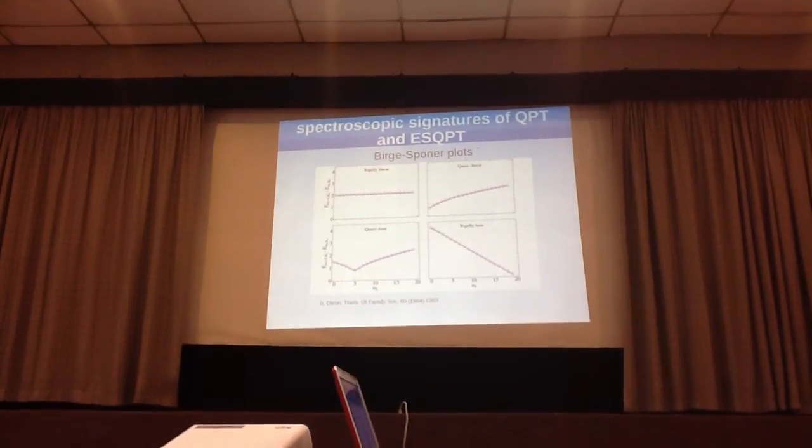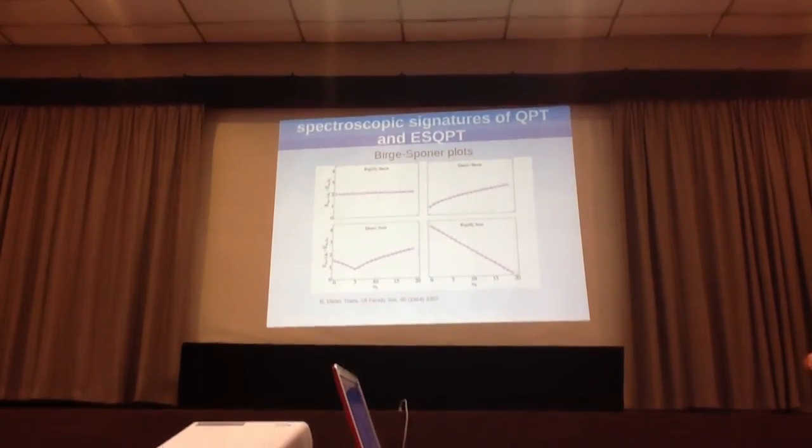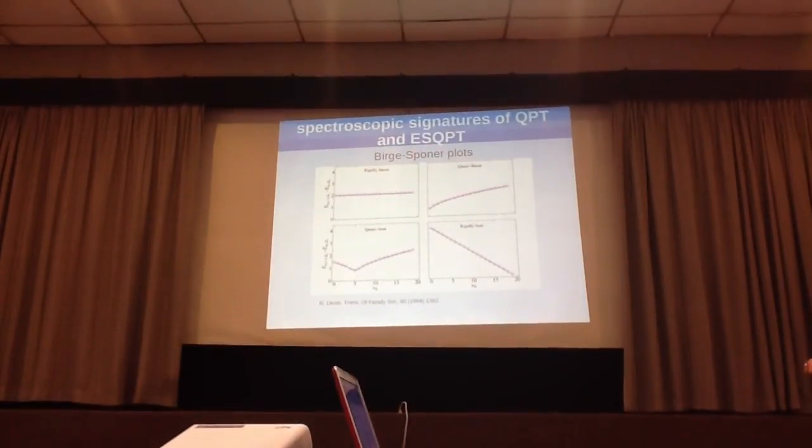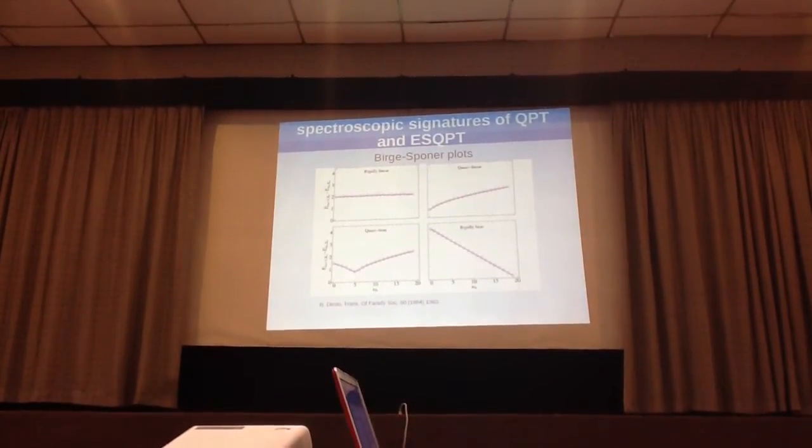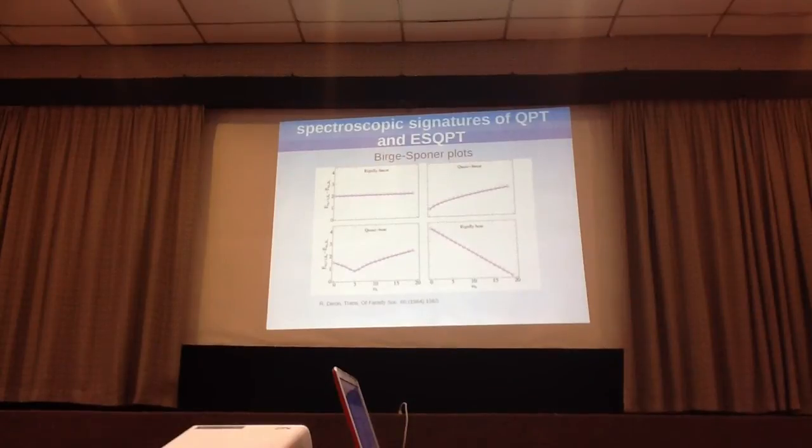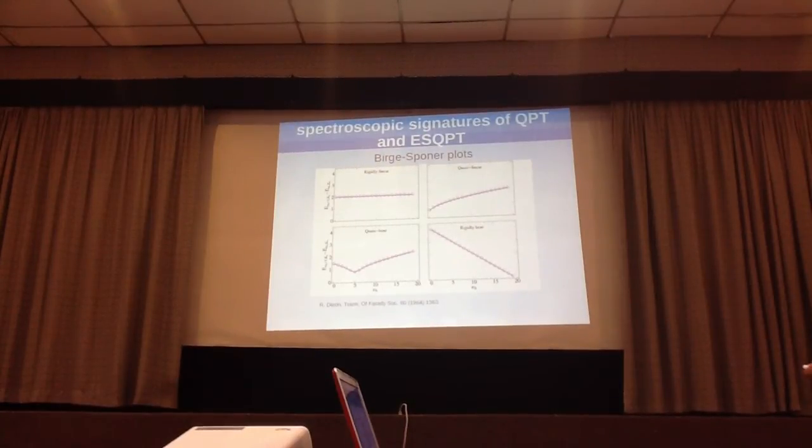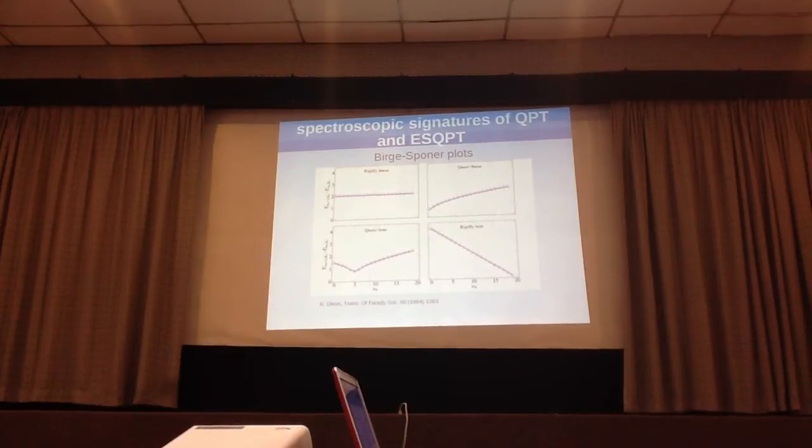For a quasi-linear molecule's levels, they should get further away from each other upon excitation of vibrational quantum numbers, so you see a positive slope. For a bent molecule, the opposite is a negative slope, so the levels are getting closer together. But the most interesting case is quasi-bent.